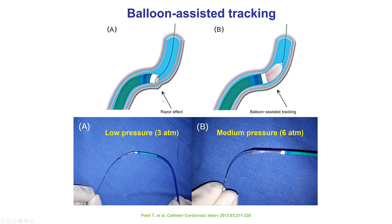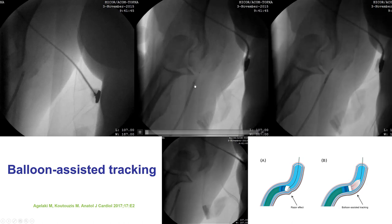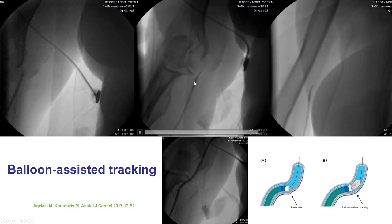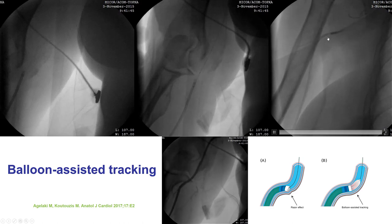Another way to facilitate advancement through tortuosity is the balloon-assisted tracking or BAT technique. This technique prevents issues such as the catheter edge going through the vessel wall and causing injury or perforation. A balloon is placed halfway in and halfway out of the guide catheter, inflated at low pressure for more flexibility or higher pressure for more stiffness, then advanced through the area of tortuosity. The balloon prevents the catheter edges from catching the vessel wall and facilitates delivery — the assembly is advanced through the loop all the way up to the ascending aorta.